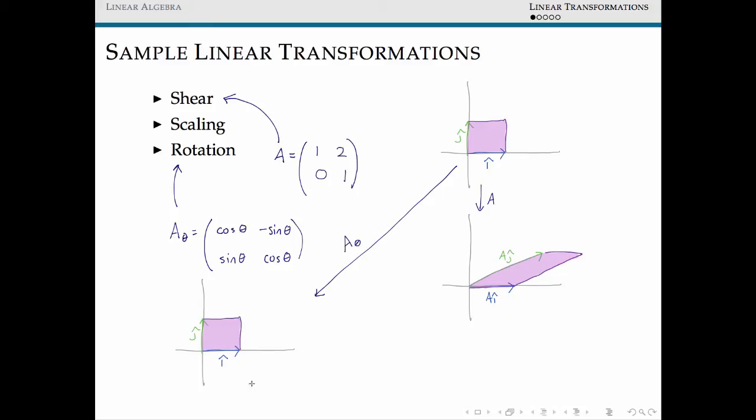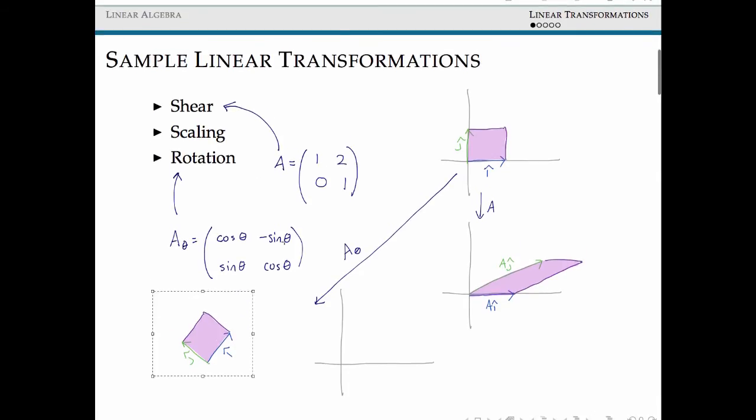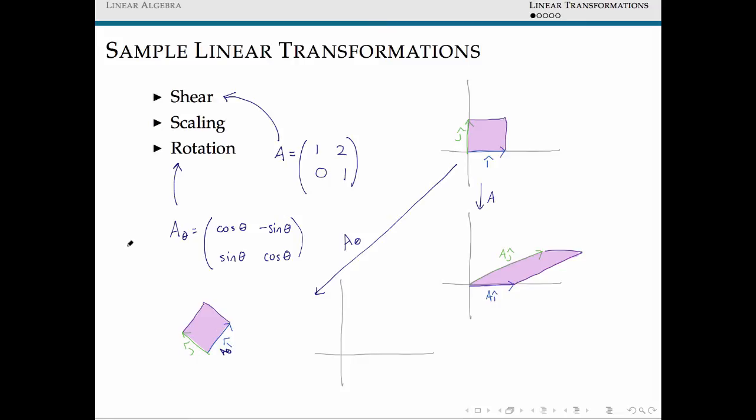What this matrix will do for some θ is it will transform our unit square or it will rotate it by some angle θ. So for our unit square here, let's actually pull out our two coordinates out of the way for just a moment while we perform this transformation in notability.